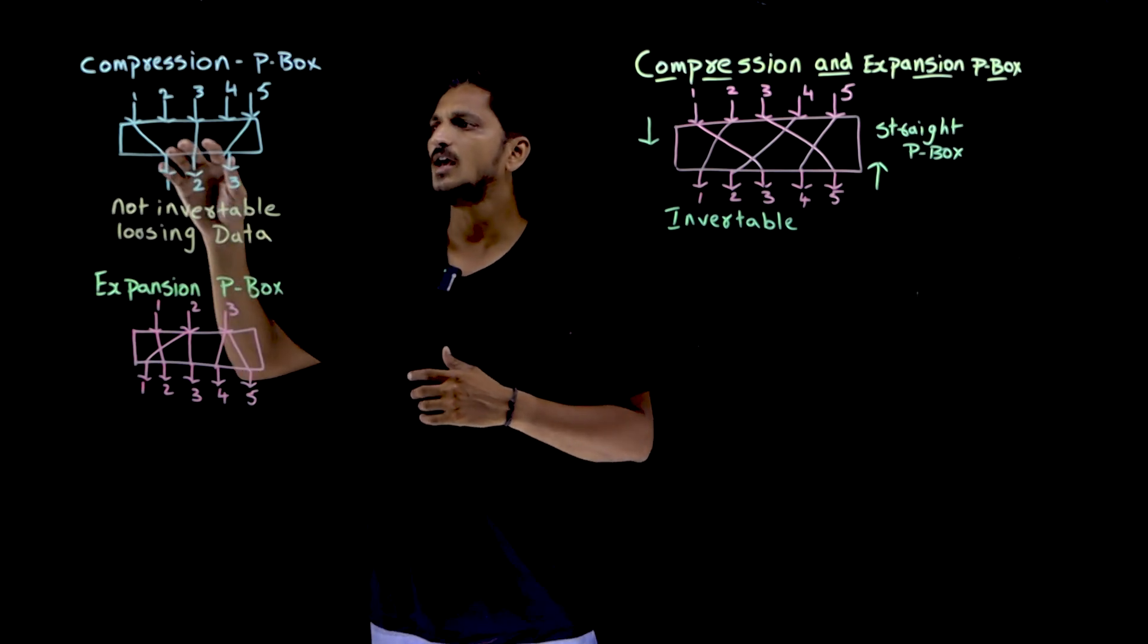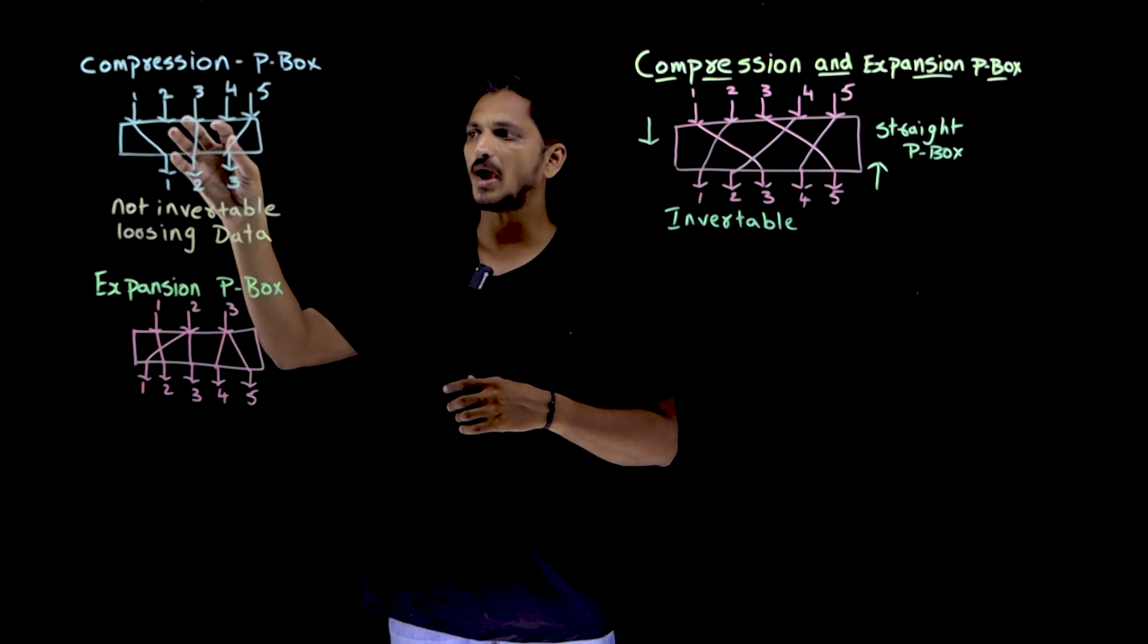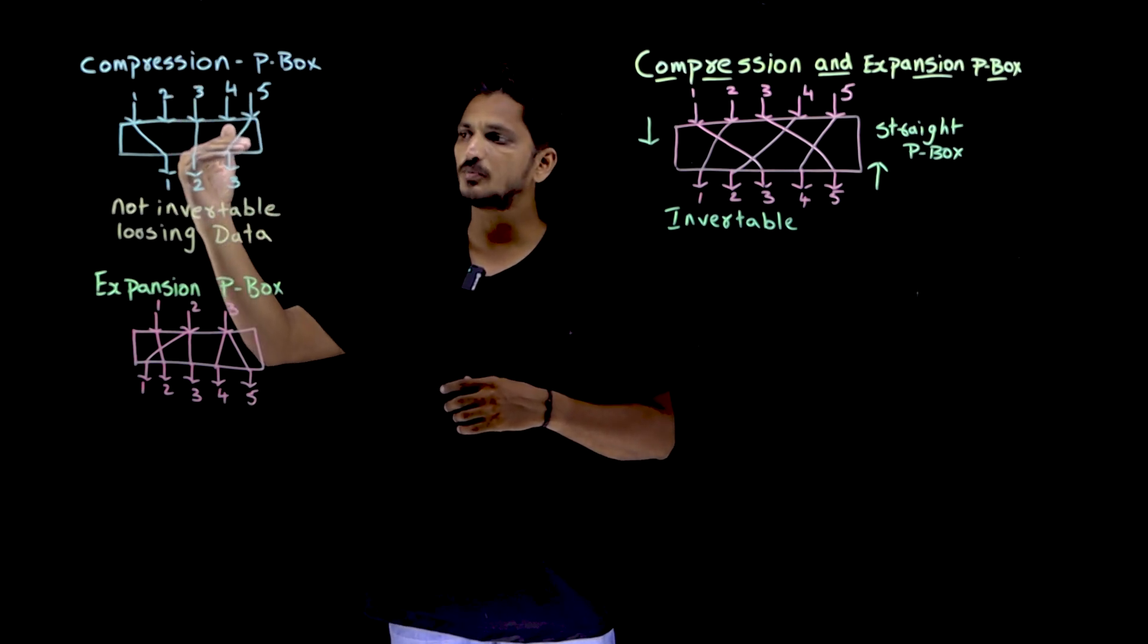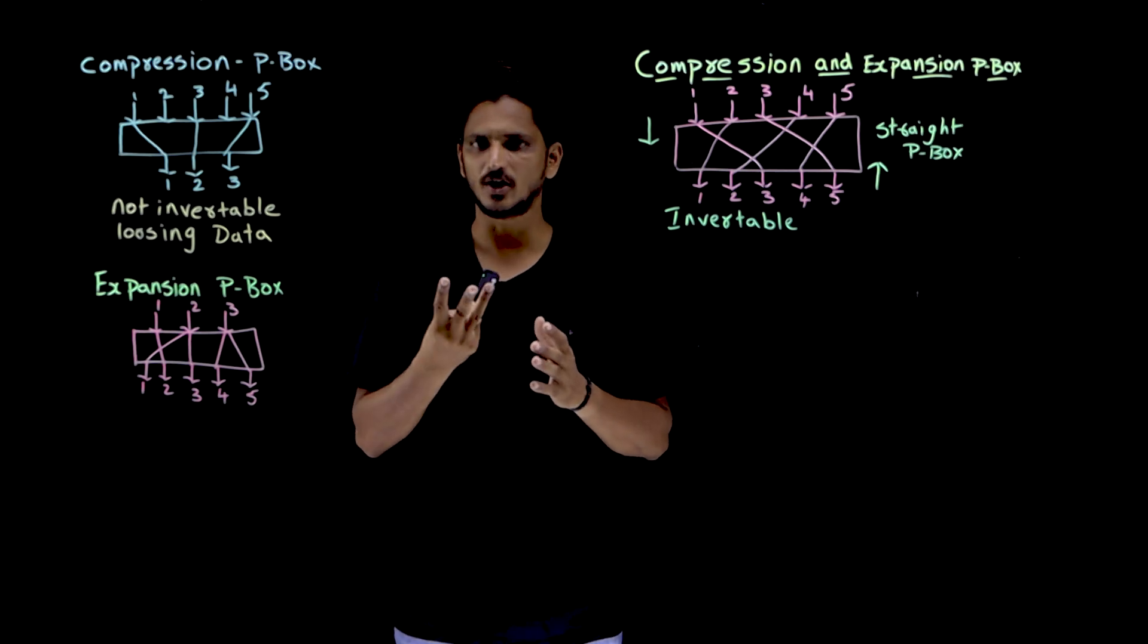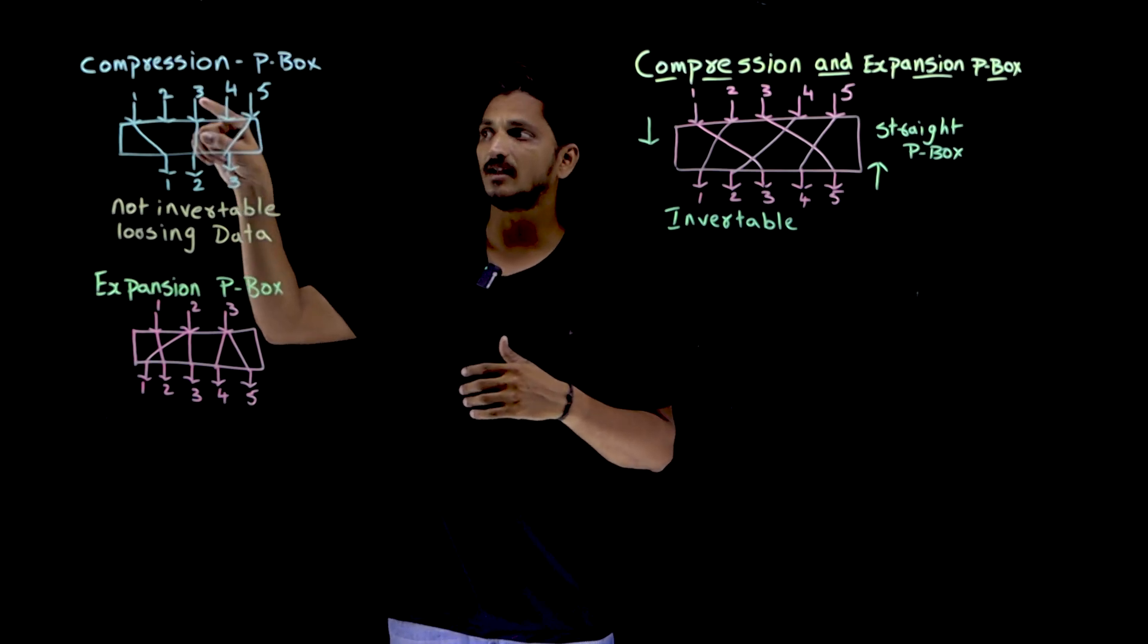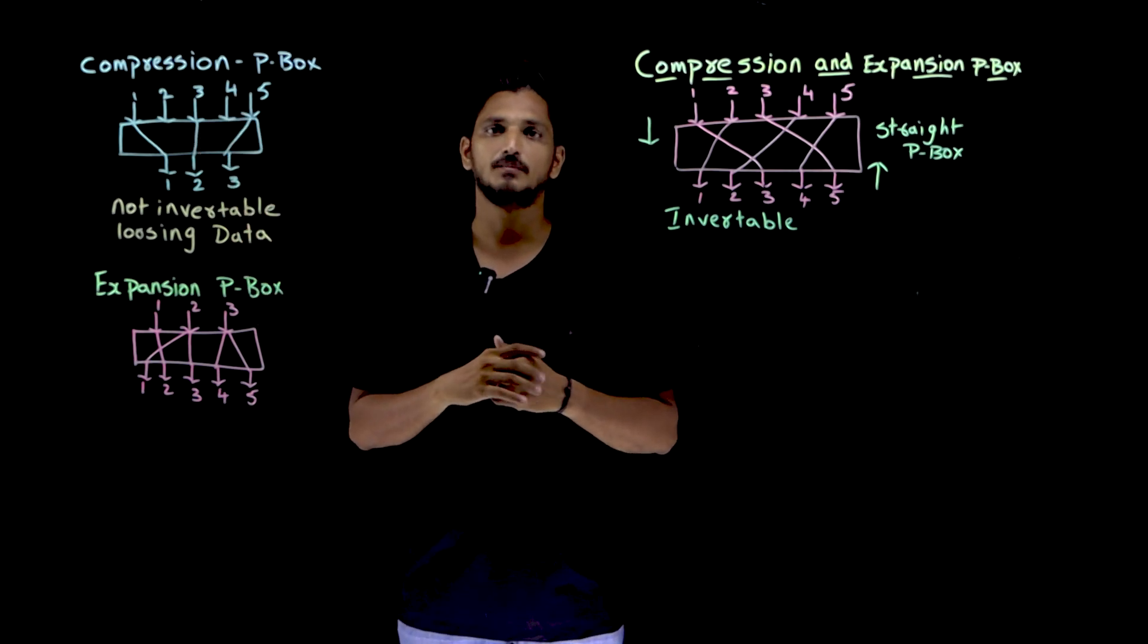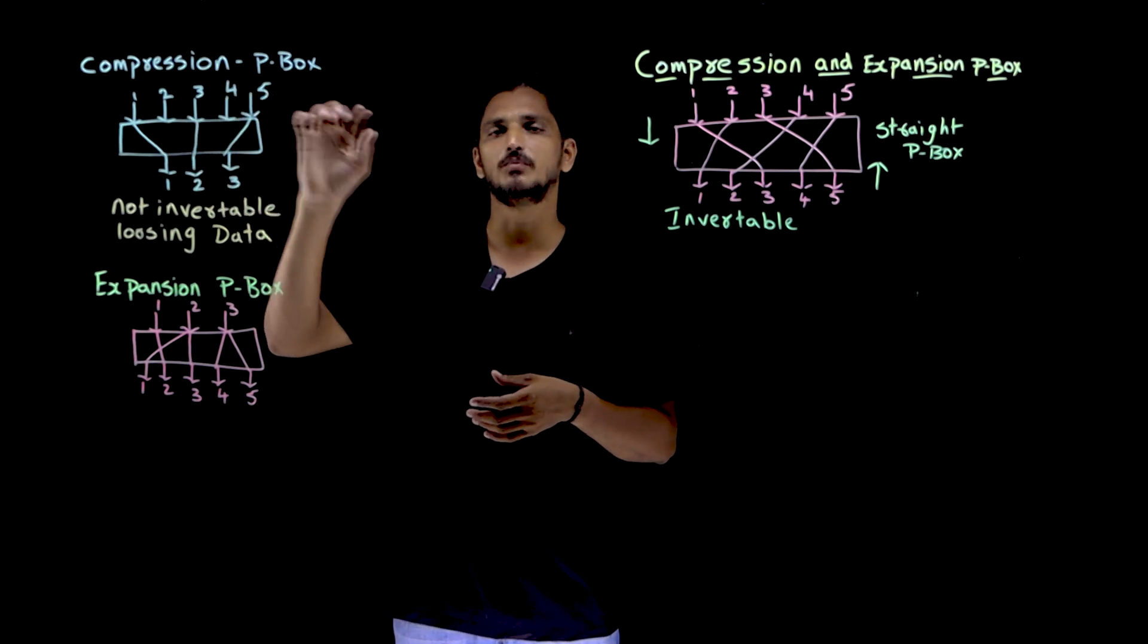Let us try to understand. If you are having 5 input bits, these 5 input bits are mapped to 3 output bits. It is not compulsory to have 3 output bits. You can have any number of output bits but less than 5. Means we are compressing the input. That is what compression P-Box.